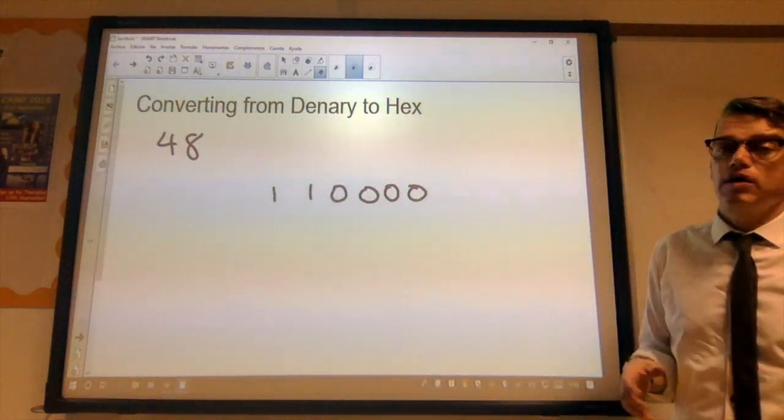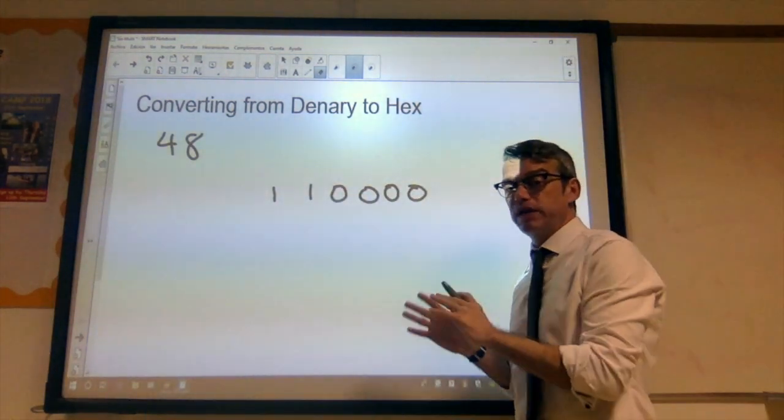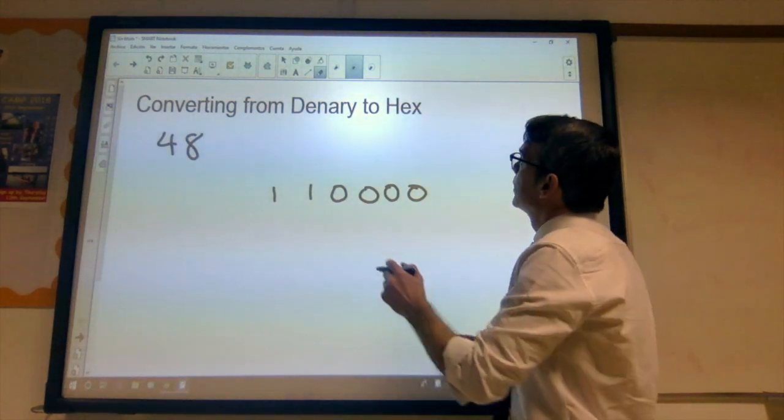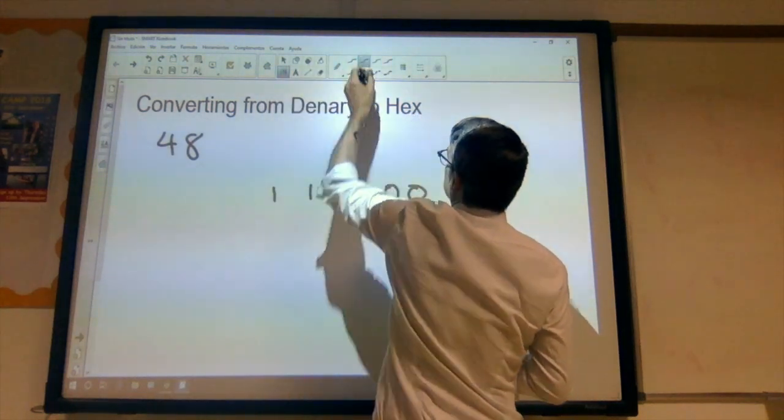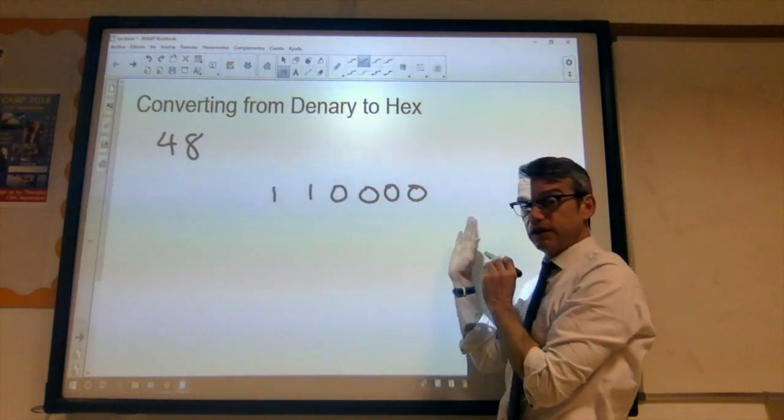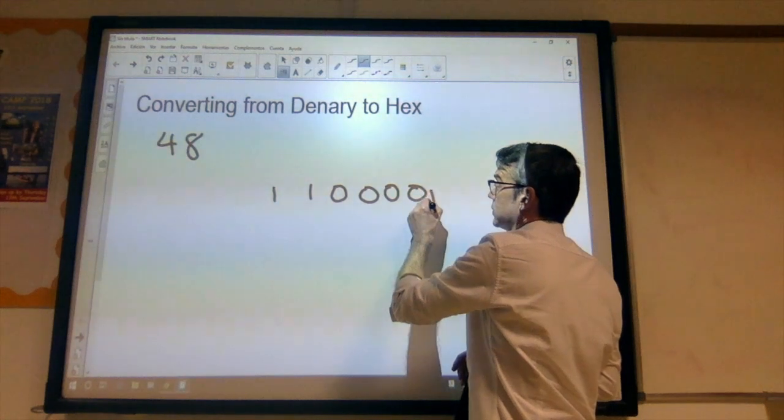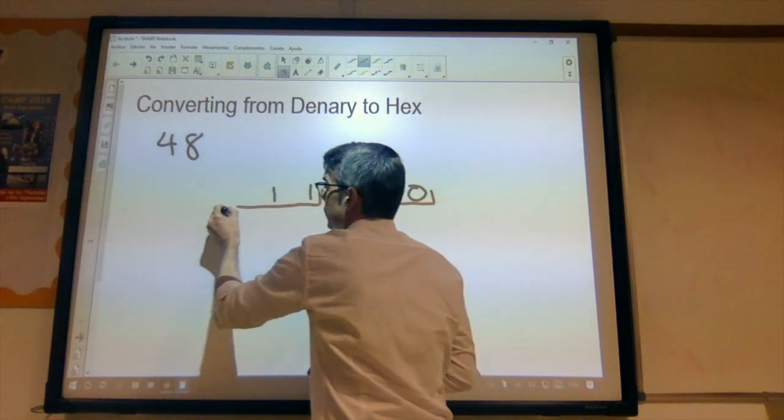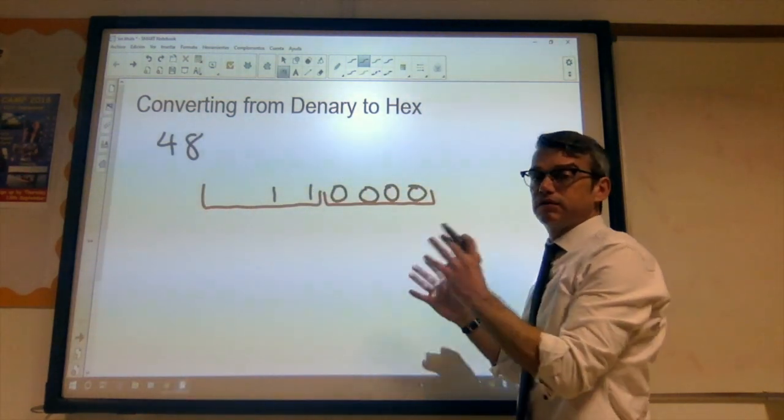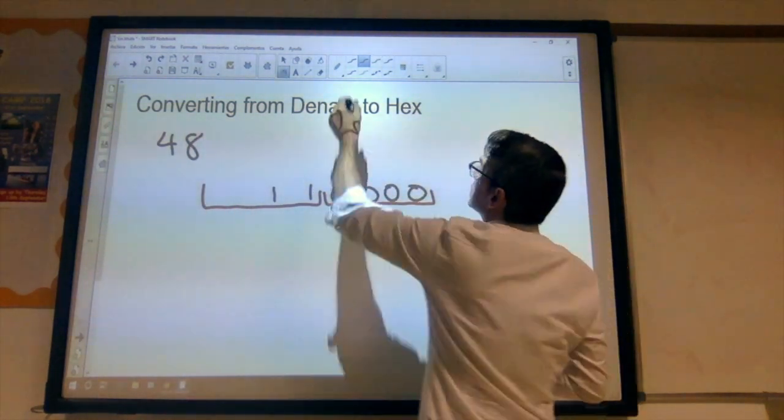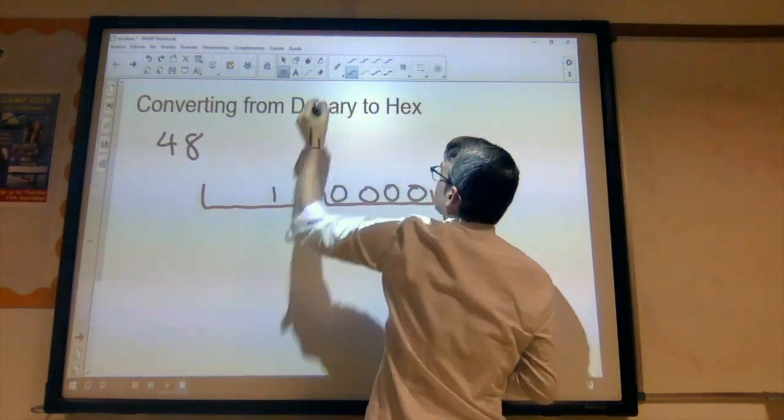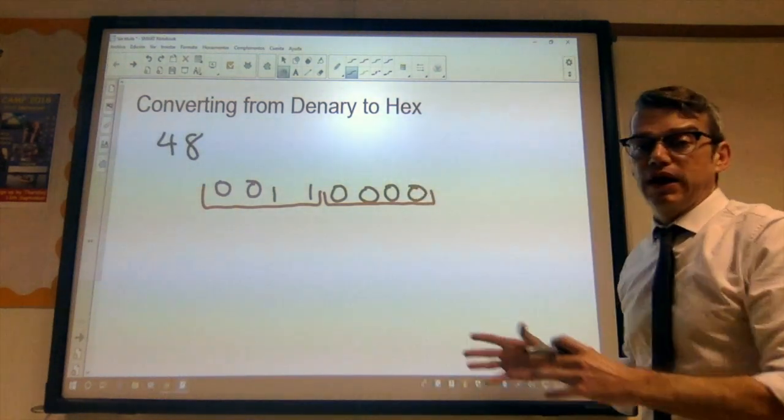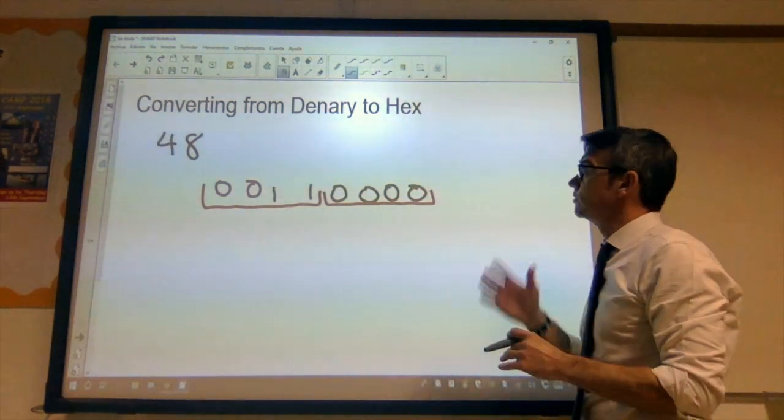So, the technique that I would recommend you use is we split up our binary number into groups of four, a nibble. So, I'm going to split those up into groups of four. So, we start starting at the least significant bit. So, one, two, three, four bits. And here, we've only got two. So, what we do is we add leading zeros, just to fill out, to make it into a group of four bits, or a group of four binary digits.